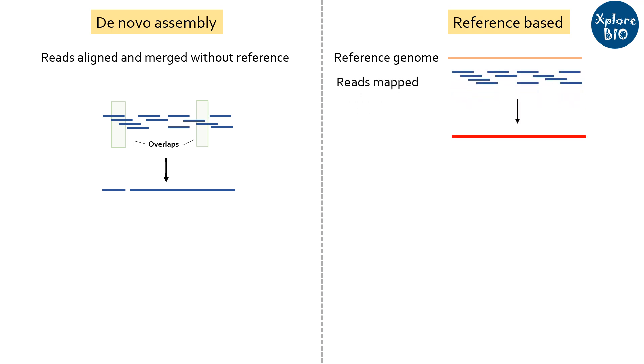In this, short reads are mapped to the genome sequence. Compared to reference-based assembly, de novo assembly requires higher sequencing depth and is computationally more demanding as the genome has to be reconstructed from scratch.